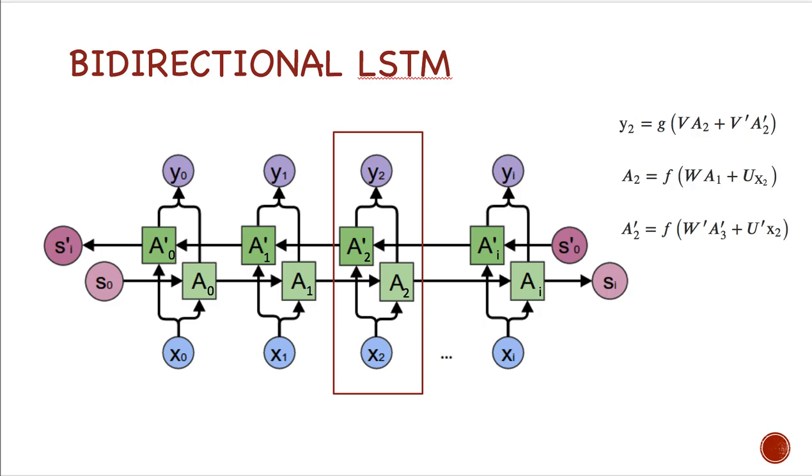However, A2 prime is using the information of A3 prime, which is the future information. And then we concatenate these two layers to get the output Y2.